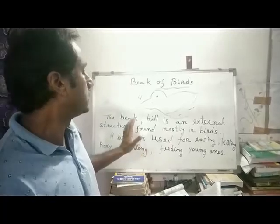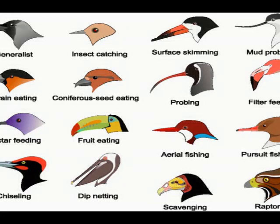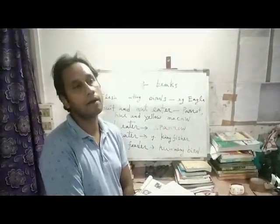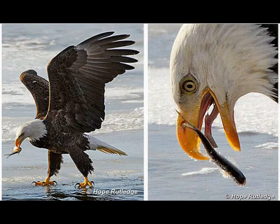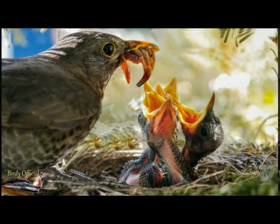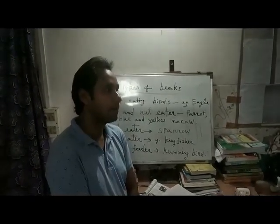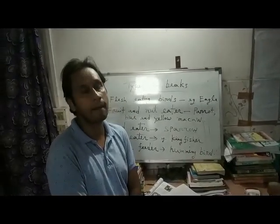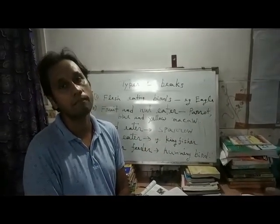Different birds have different structures and different types of beaks. The beak is used by birds for eating, fighting, killing prey, and feeding their young ones. It is a very hard structure. Since birds have no teeth, they have beaks instead. Different birds have different types of beaks.